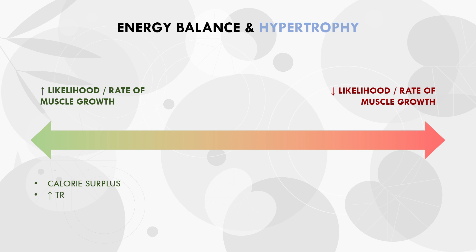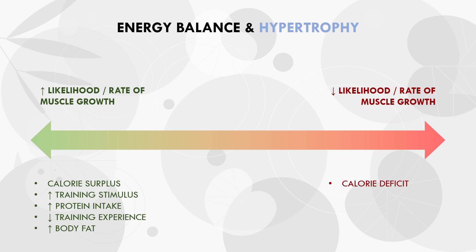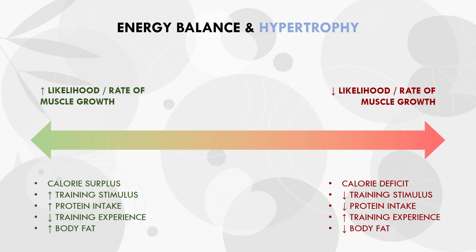I like to think of this concept on a spectrum — on one side, a higher likelihood or rate of muscle growth, and on the other, a lower likelihood. If a trainee has a good training program, a high protein intake, low training experience, and higher relative body fat, these factors increase their chances of muscle growth. Conversely, a poor training program, low protein intake, high training experience, and very low body fat will all further decrease the likelihood. So trainees can still gain muscle in a calorie deficit, but a surplus will probably maximize the rate of growth.